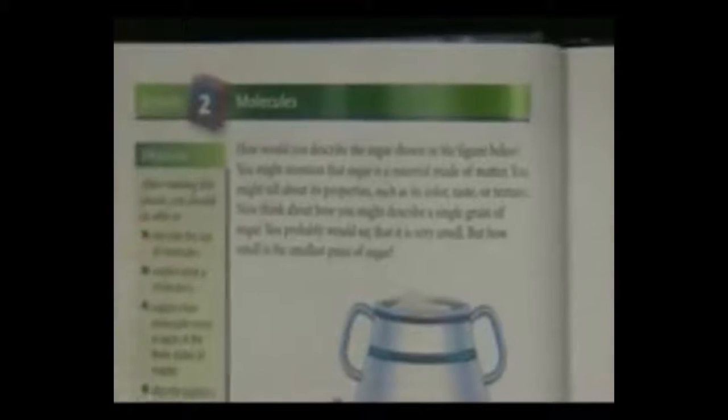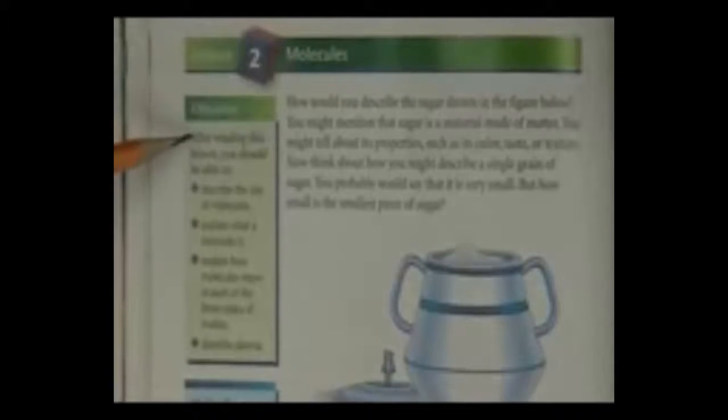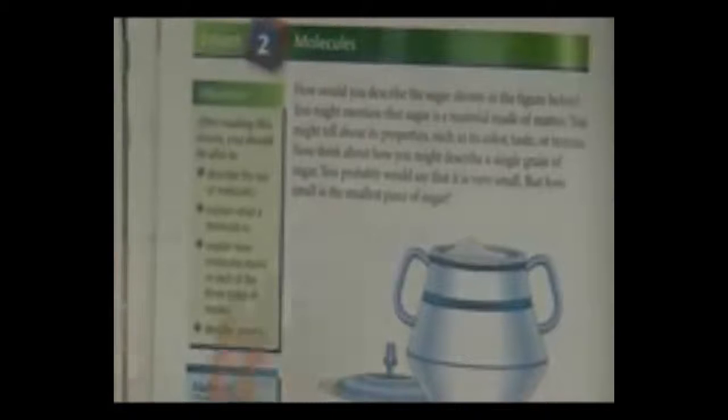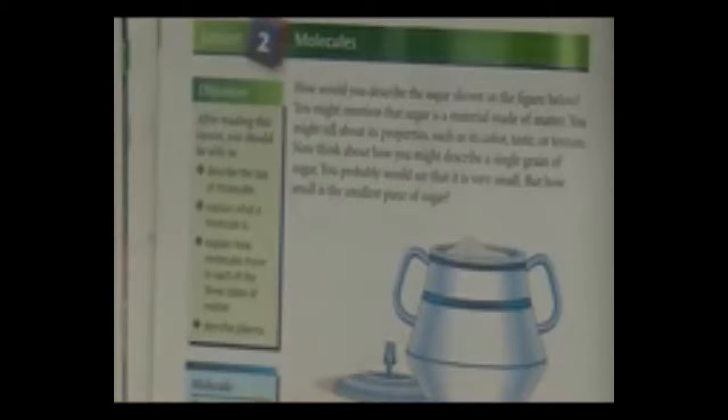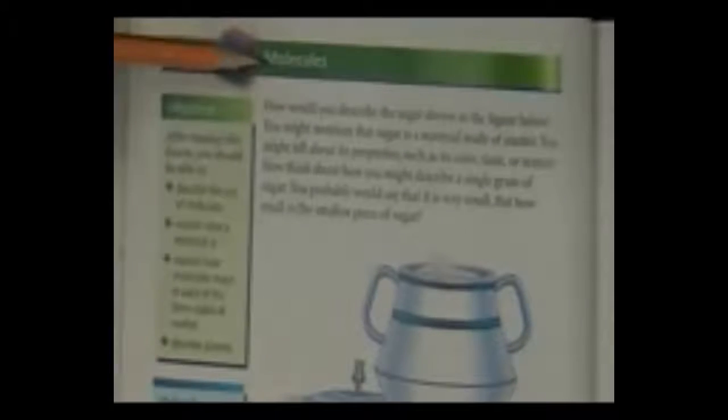Lesson 2 is about molecules. Here are some of the learning objectives about molecules over here on the left side. After reading this lesson, you should be able to describe the size of molecules, explain what a molecule is, explain how molecules move in each of the three states of matter: solid, liquid, gas, and describe plasma, which is a kind of energy.